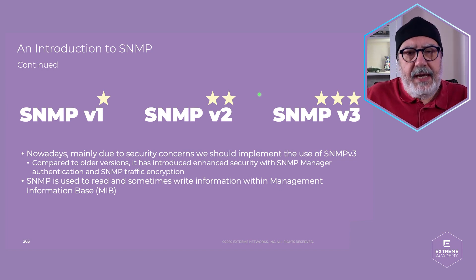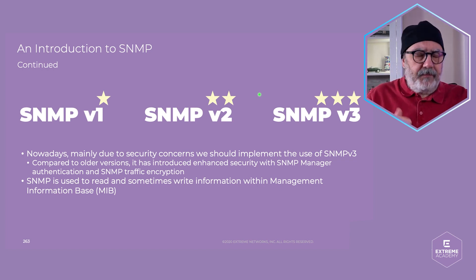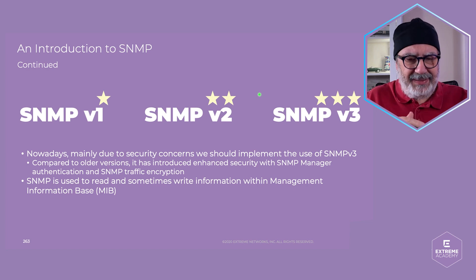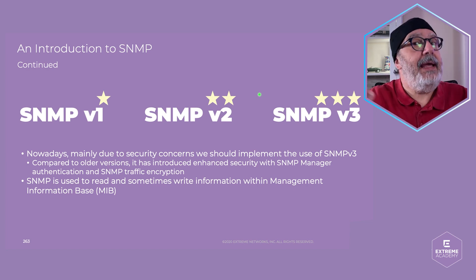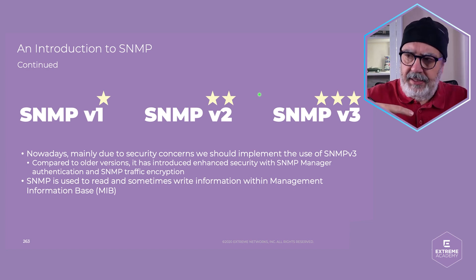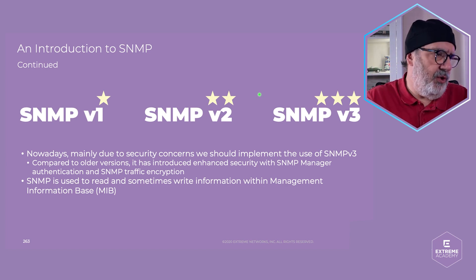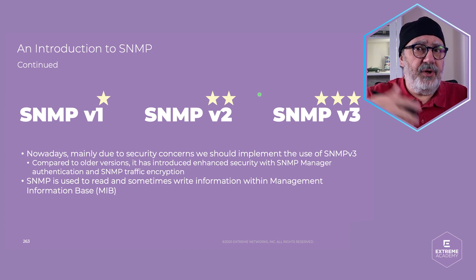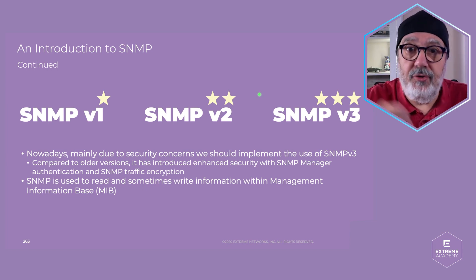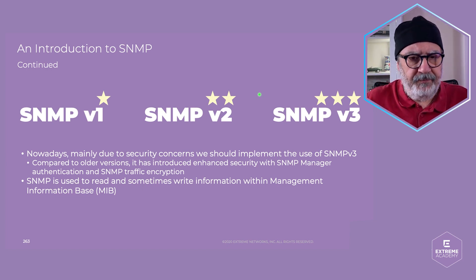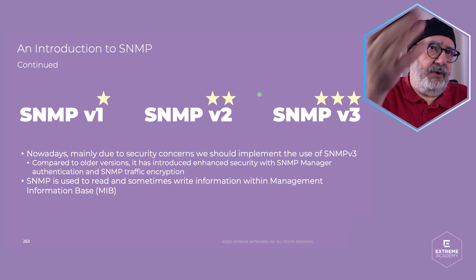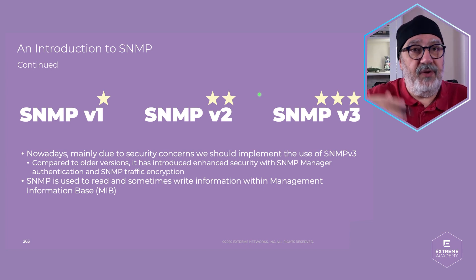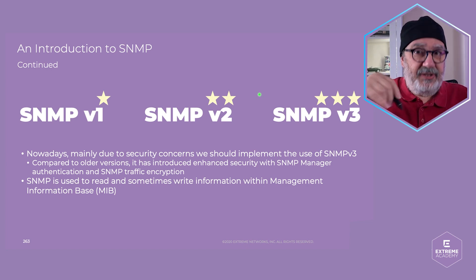SNMP has had three generations. The first generation already worked really well, but it did everything in clear text, meaning the communication between your network management system, the agent, and the device was completely open — anyone could read it, it wasn't secure. SNMP version 2 was still open; it had some improvements but was still not secure.